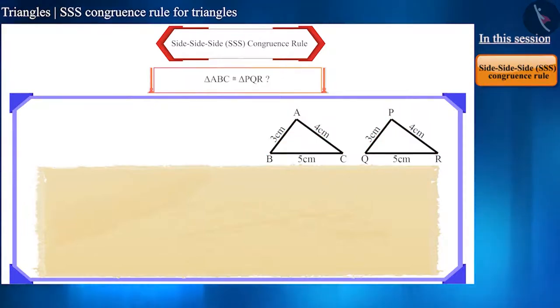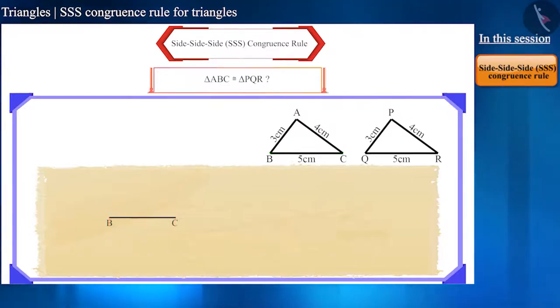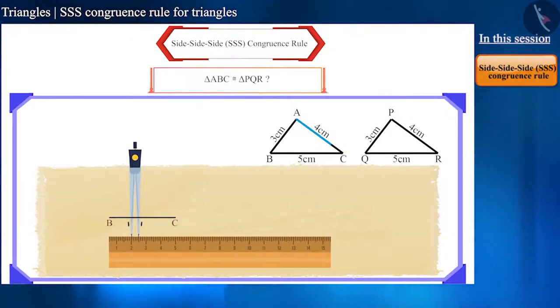Here, in triangle ABC, let's consider BC as the base and draw a line of length 5 cm. Now, take the measurement of AC in a compass, which is 4 cm. Place it on point C and draw an arc. Now, take a measurement of 3 cm in a compass, place it on point B and draw another arc.